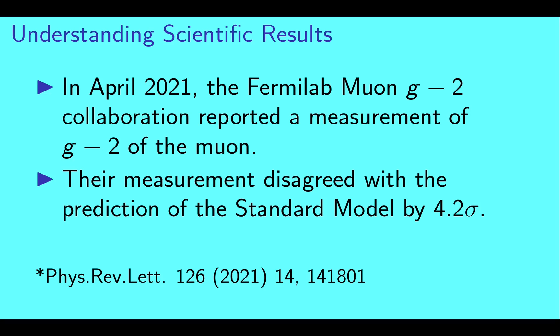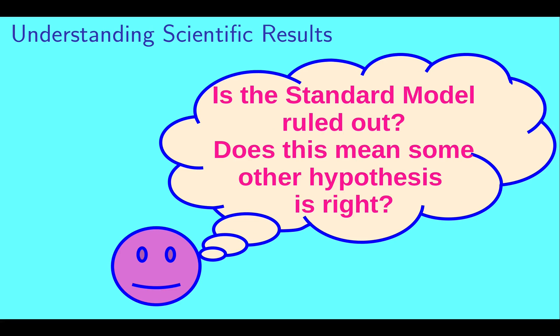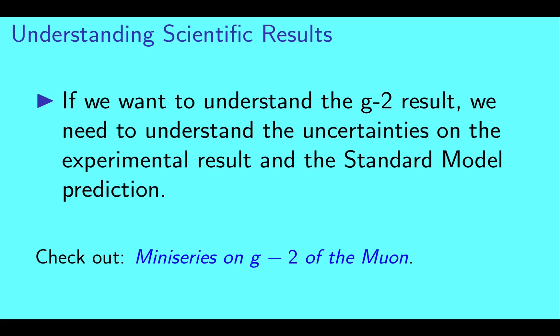In April of 2021, the Fermilab Muon g-2 collaboration reported a measurement of a quantity called g-2 of the muon. Their measurement disagreed with the standard model prediction by 4.2 sigma. There are lots of questions one could ask upon hearing this information, like: what does this result mean? How large is the disagreement? Or is the standard model ruled out? Does this mean some other hypothesis is right? If we want to understand the muon g-2 result, we need to understand the uncertainties on both the experimental result and the standard model prediction. We won't get into the details here, but if you're interested, check out the playlist Mini-Series on g-2 of the Muon.